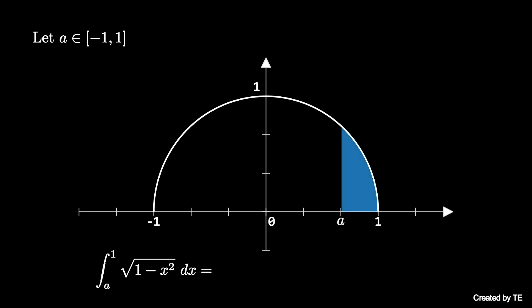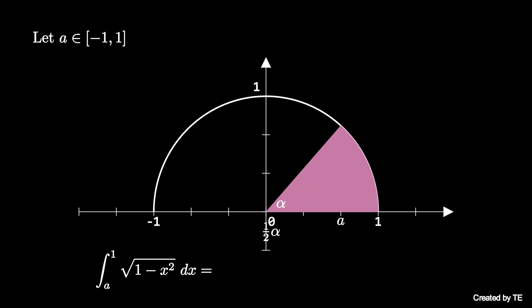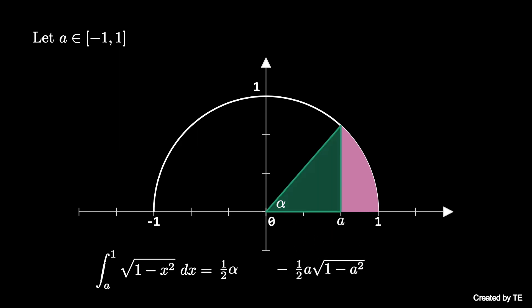To find this area, we can first find the area of the full sector covering the region. If this sector has angle alpha, then the area is 1 half alpha because the radius is 1. The area we want is this area minus the area of this right triangle with base a and height square root of 1 minus a squared. Note that this right triangle also shows that the cosine of alpha is a, so that alpha is the arc cosine of a, giving the formula for the area we want in terms of a.